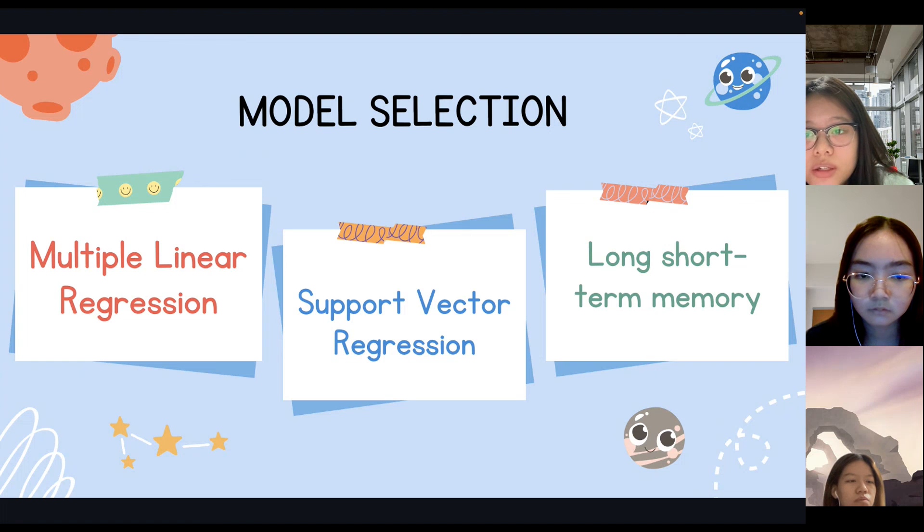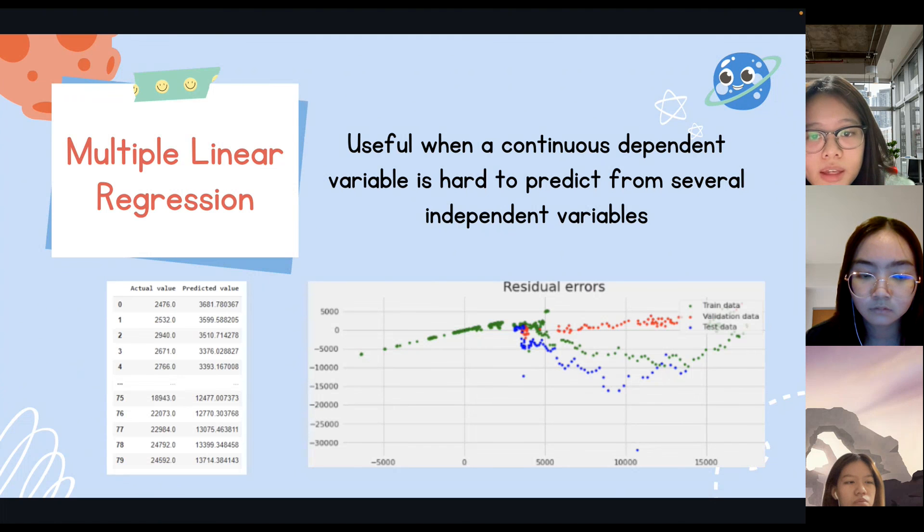As a result, this study found that each model has a different performance evaluation. This slide represents the performance of multiple linear regression. The value of the test set definitely increased according to the number of data. However, this model shows an MSE value which is around 100 million.